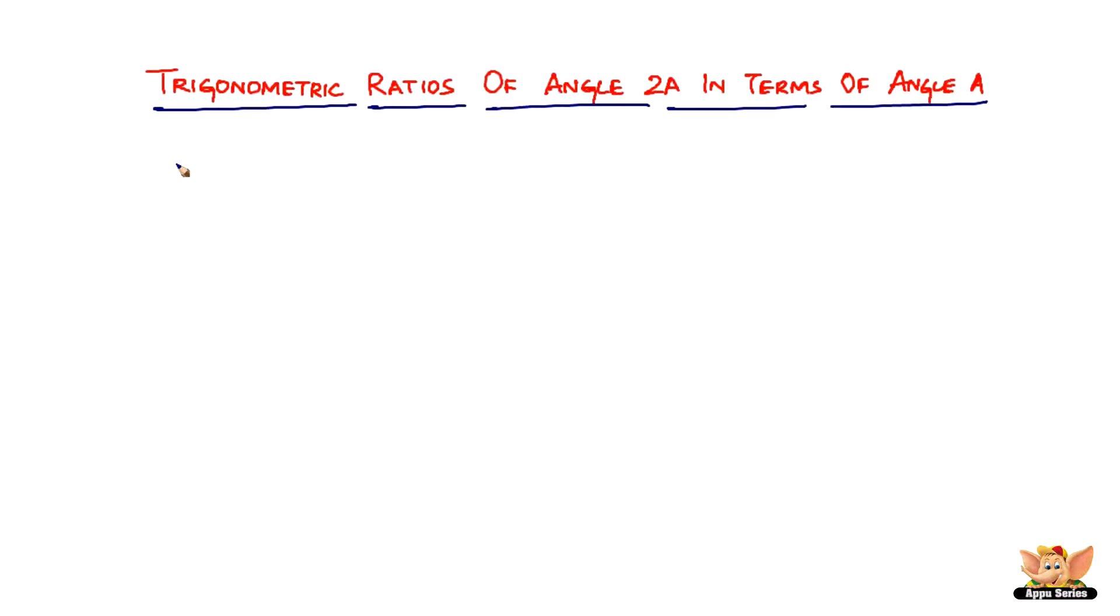In this video we are going to look into some of the results based on trigonometric ratios of angle 2a in terms of angle a. We can call this multiple angles - this is trigonometric ratios of multiple angles, 2 times a. That's why we call it multiple angles.